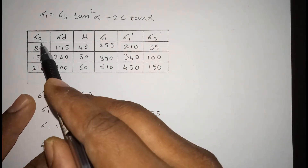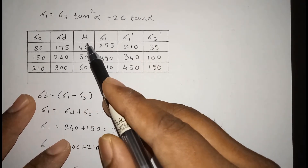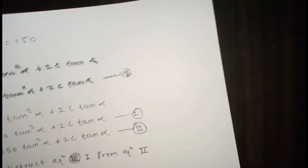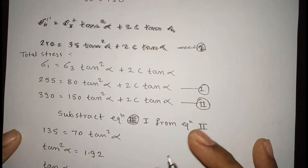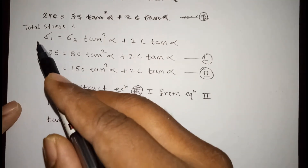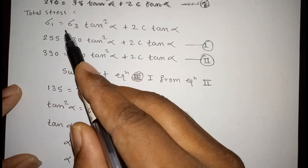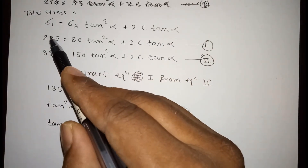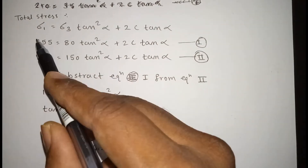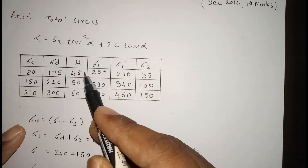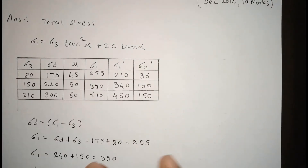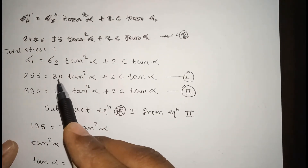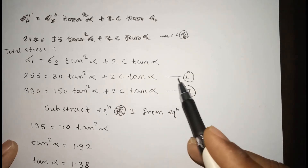Now we have the complete table with σ3, σd, μ, σ1, σ1', and σ3'. For total stress, we use the formula σ1 = σ3·tan²α + 2c·tan α. Taking the first series: σ1 = 255 and σ3 = 80, so 255 = 80·tan²α + 2c·tan α. This is equation 1.